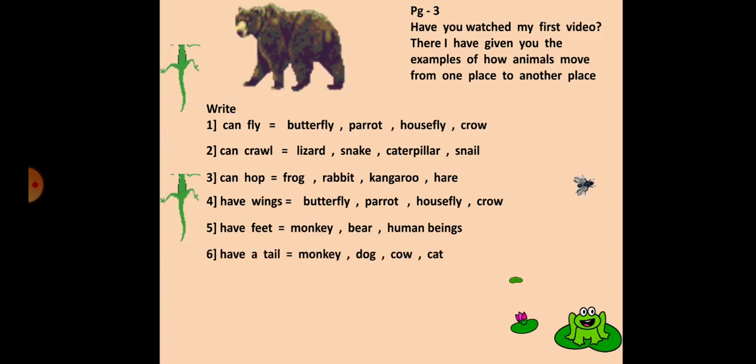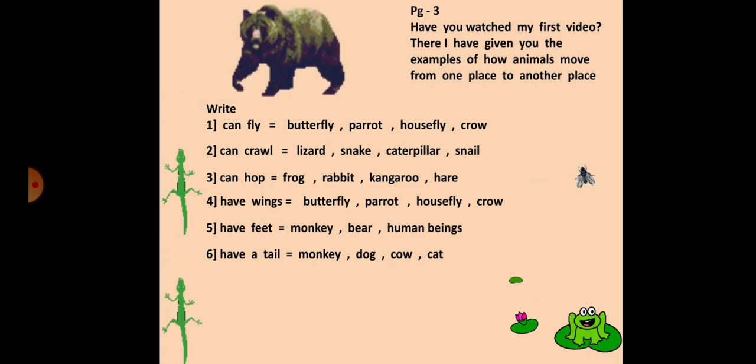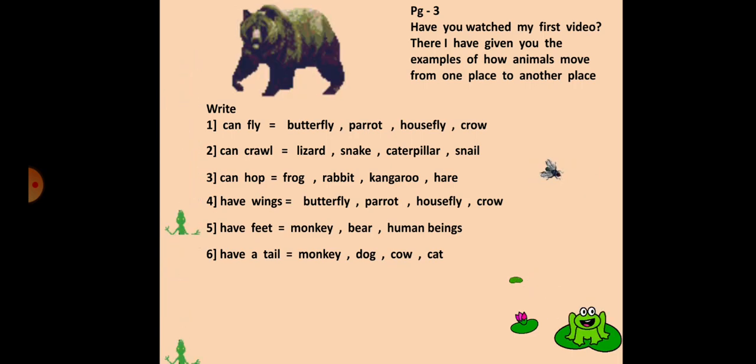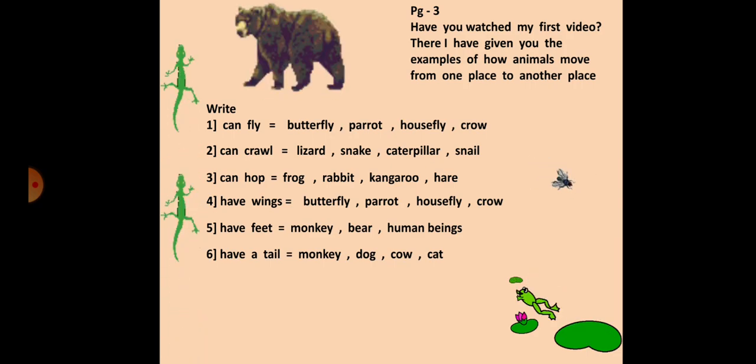And the sixth one is have a tail: monkey, dog, cow, cat. Again I am telling you, children, you can always write your own answers. You need not copy these answers. These are only a help for you. Please be free to add your own answers.